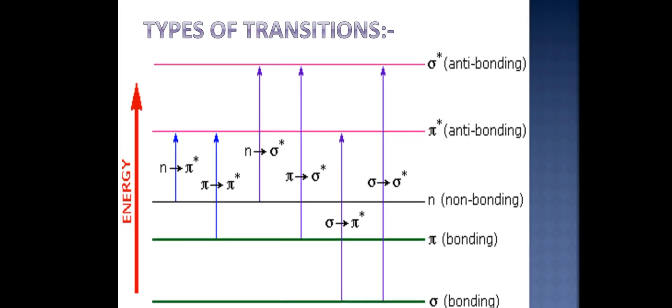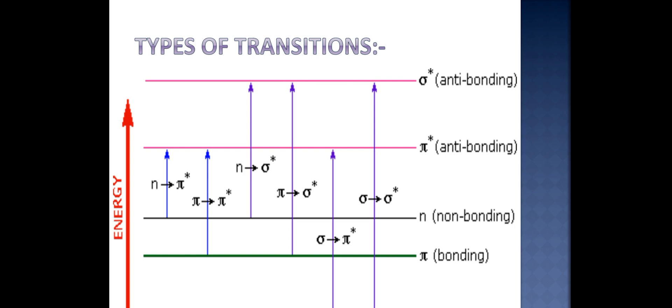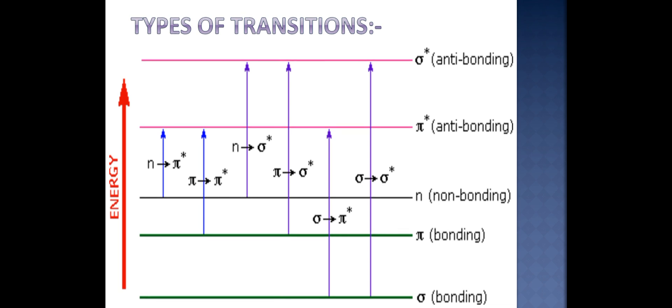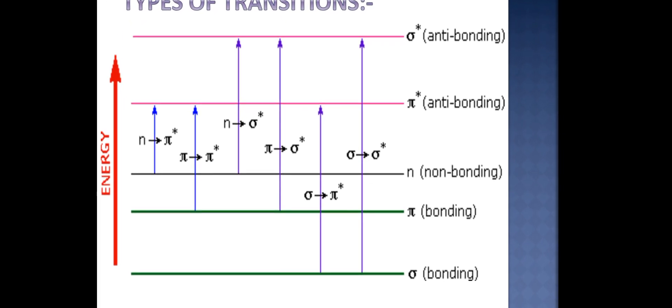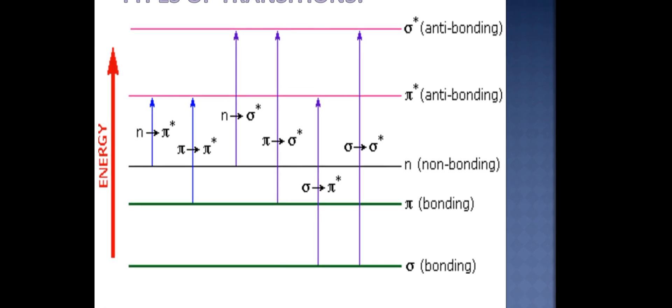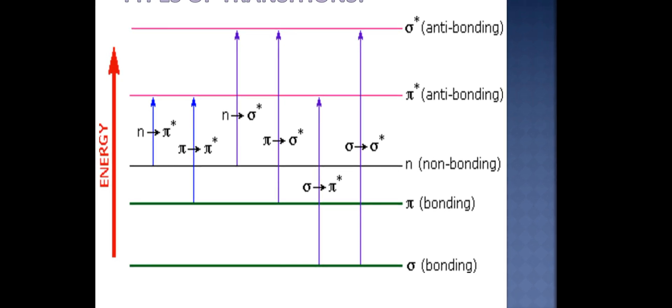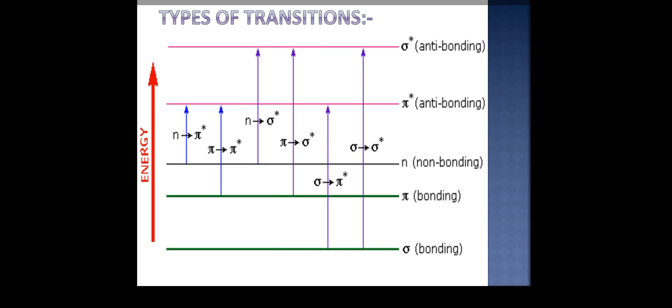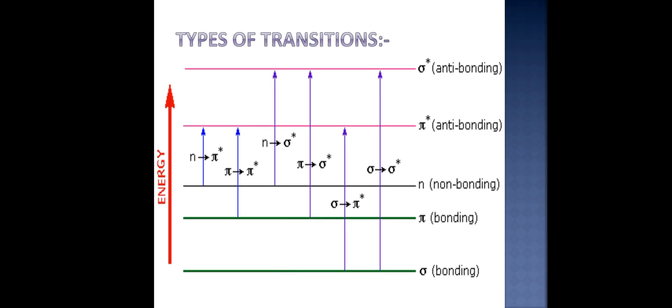In this diagram we will see the transition of the electrons. As you can see, the sigma to sigma anti-bonding transition takes the most amount of energy. Then sigma to pi star molecular orbital takes second place. Then pi to sigma star transition takes place, and then n to sigma star transition takes place. This is generally showing the transfer of electrons from HOMO, the highest occupied molecular orbital, to LUMO, the lowest unoccupied molecular orbital.